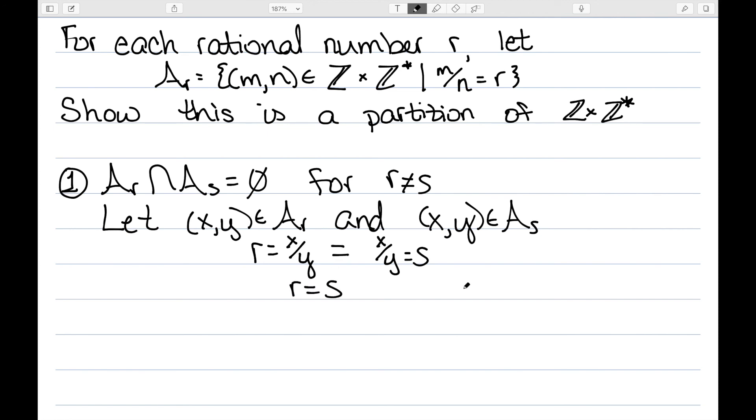So these are equal, which tells us that r is equal to s. So if there's an element in both sets, if there's an element in this intersection, then it must be that it is the same set. So this part is done.